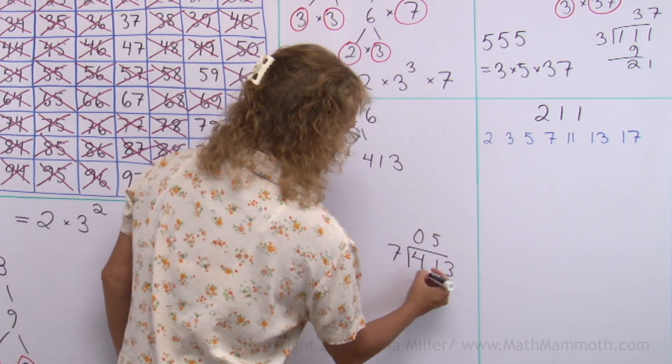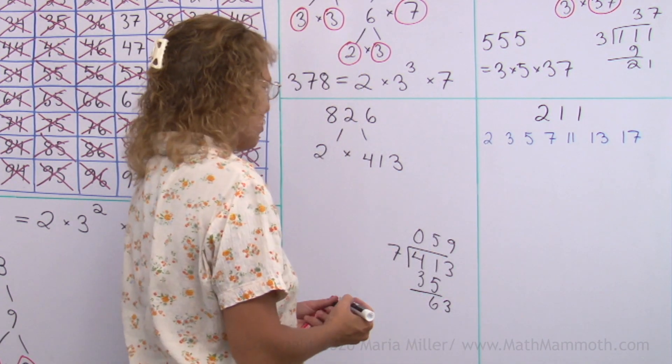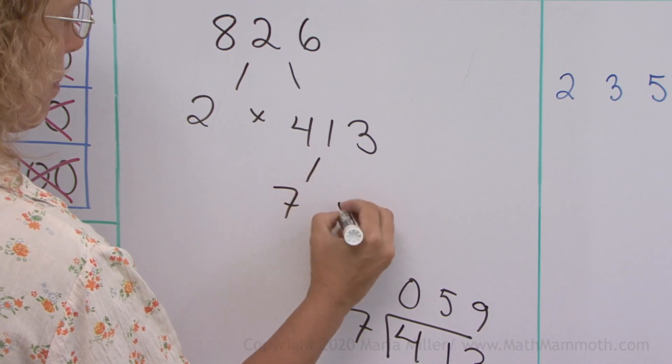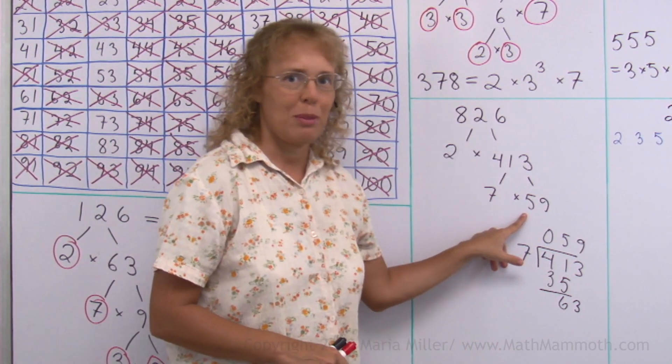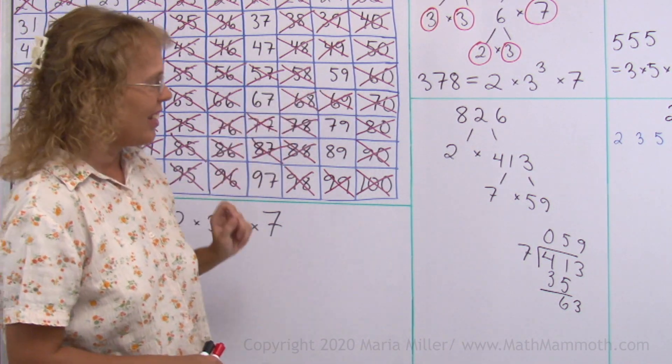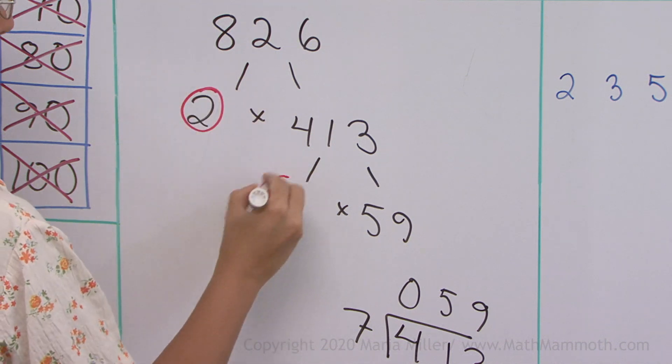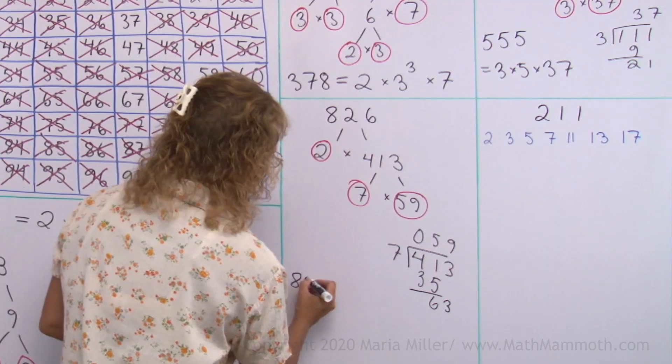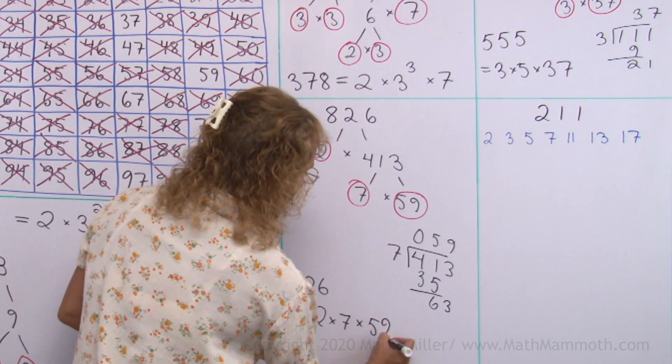It goes 5 times here, 35. Then 63 goes evenly. Yes, it does. We get 59 here. 7 times 59. And 59, maybe you know, it is prime over here. So once again, I'm done. 2 is prime, 7 is prime, 59 is prime. And we write the factorization here somewhere. Equals 2 times 7 times 59.